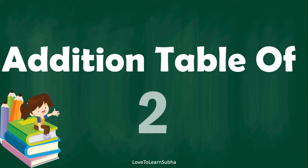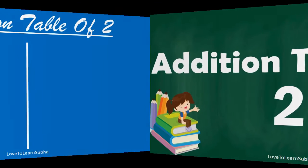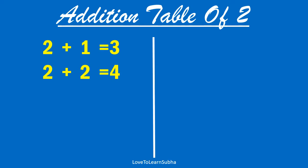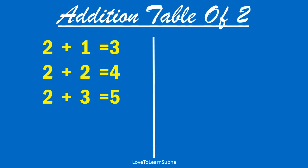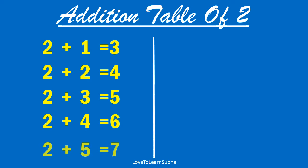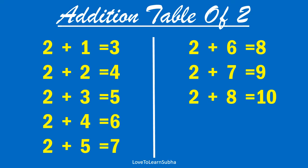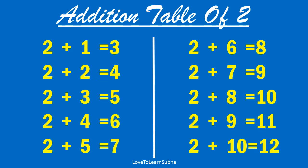Addition table of 2. 2 plus 1 equals 3. 2 plus 2 equals 4. 2 plus 3 equals 5. 2 plus 4 equals 6. 2 plus 5 equals 7. 2 plus 6 equals 8. 2 plus 7 equals 9. 2 plus 8 equals 10. 2 plus 9 equals 11. 2 plus 10 equals 12.